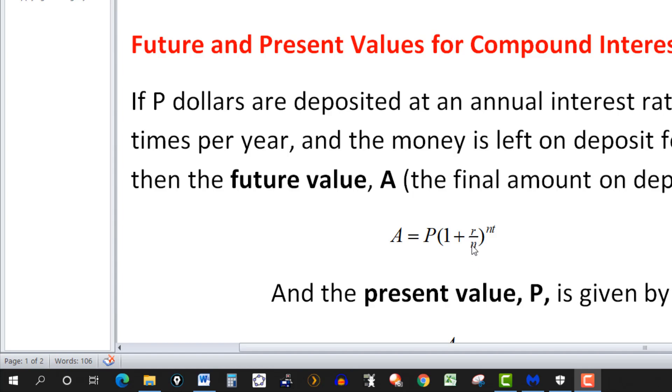N is the frequency of compounding. If it's annual compounding, N will be 1. Semi-annual, N will be 2. Quarterly, N will be 4, that's every 3 months per year.